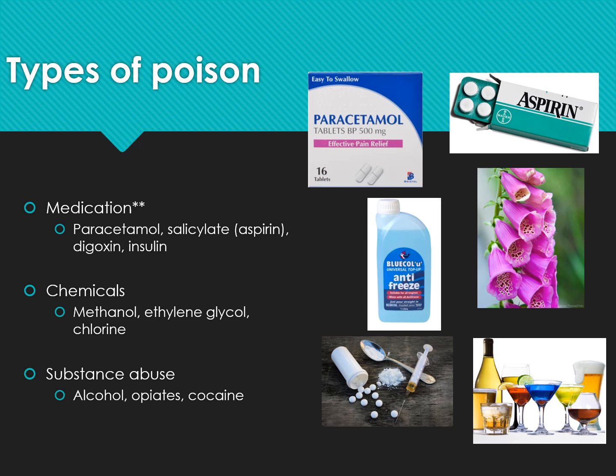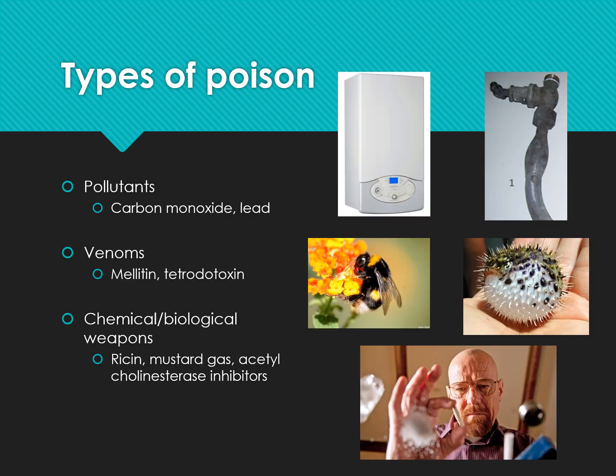When it comes to medicine, you have different types of poison. You have medications such as paracetamol, salicylate, aspirin, digoxin, and insulin. You have chemical poisons such as methanol, ethylene glycol, and chlorine. Substance abuse involving alcohols, opiates, and cocaine. Pollutants such as carbon dioxide, carbon monoxide, and lead. Venoms, and chemical biological weapons such as sarin, mustard gas, and acetylcholinesterase inhibitors.